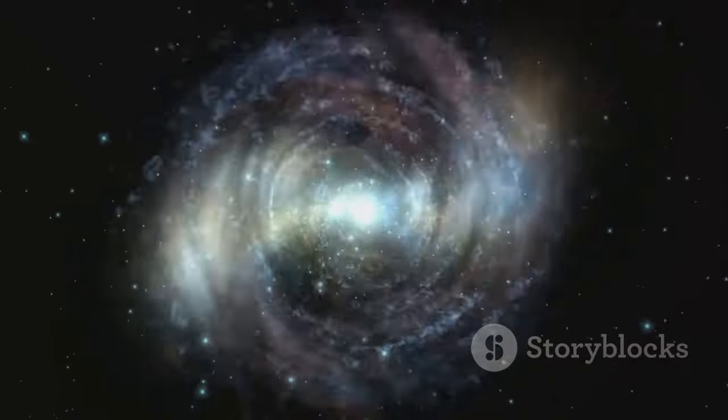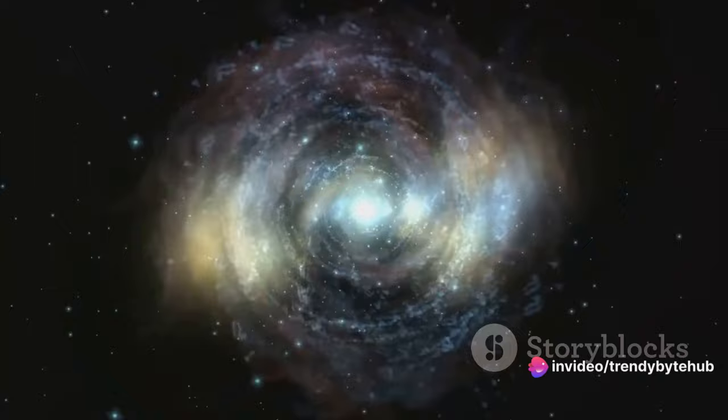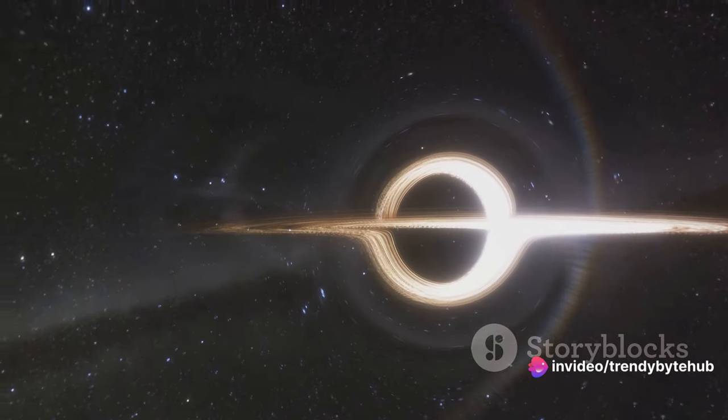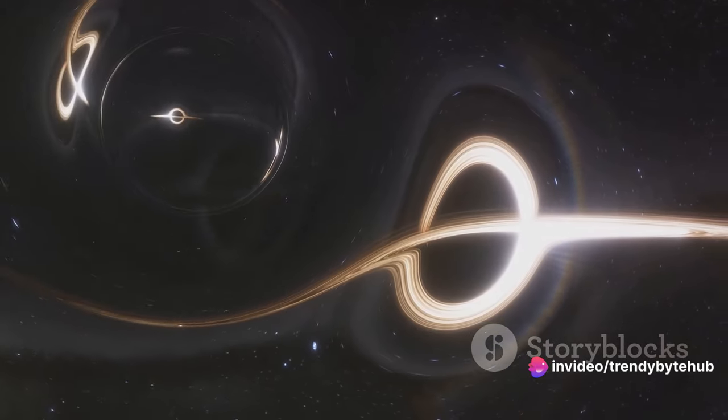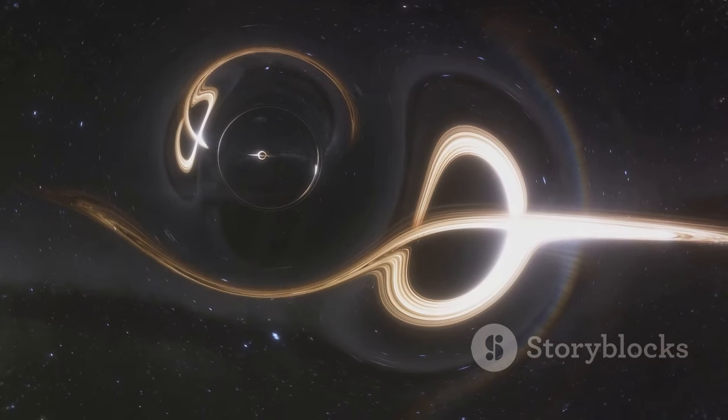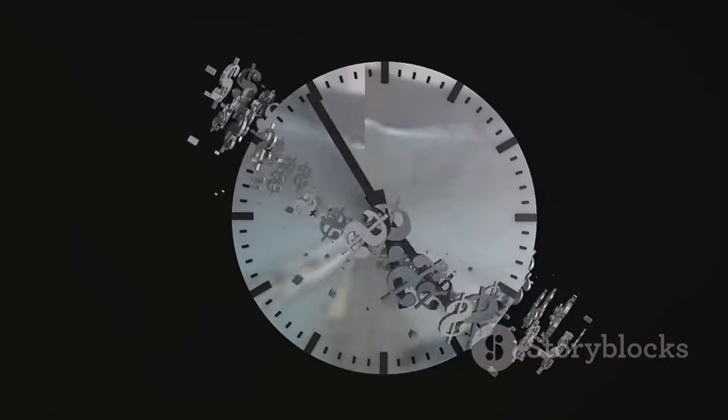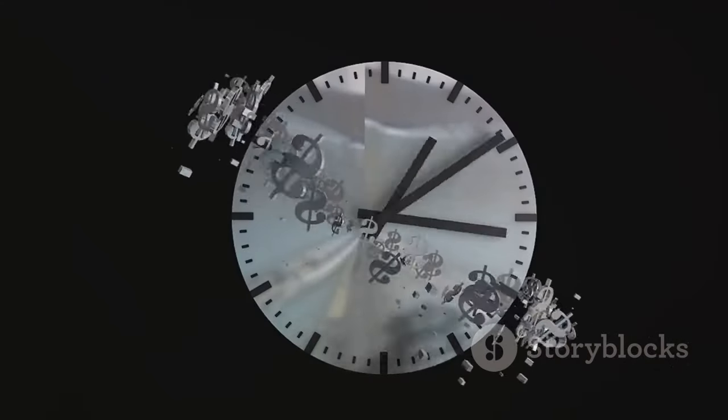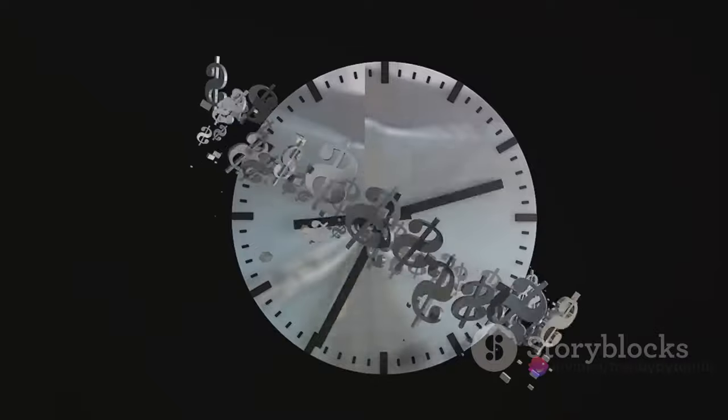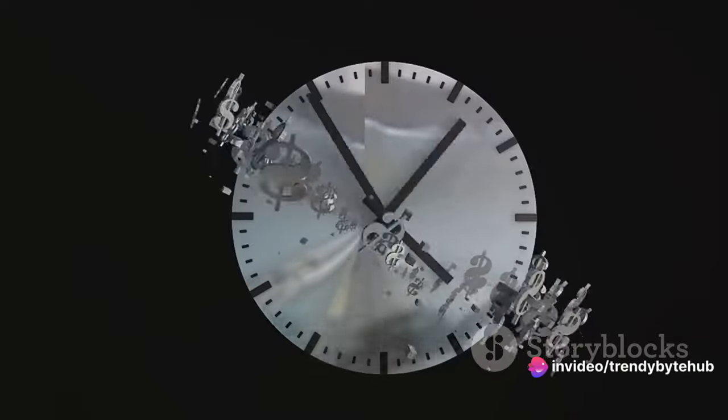This is where the universe's cooling and expansion come into play. They're intimately linked with another concept: entropy, or disorder. As the universe expands, it moves from a state of low entropy, or high order, to high entropy, or disorder. We can think of the Arrow of Time as being dragged along by this increase in entropy.